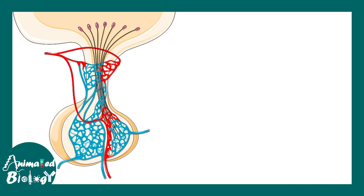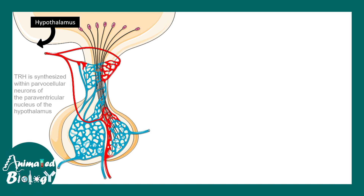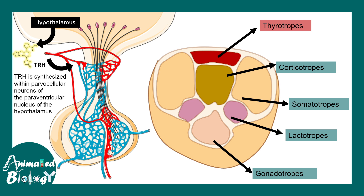Let us try to understand how this regulation happens. In the hypothalamus, there are specific cell types — parvo-nuclear neurons in the paraventricular nucleus of the hypothalamus — which secrete TRH. The TRH gets secreted into the portal system and reaches the anterior pituitary. In the anterior pituitary, there are many different types of cells like thyrotrophs, corticotrophs, somatotrophs, lactotrophs, gonadotrophs, and many more.